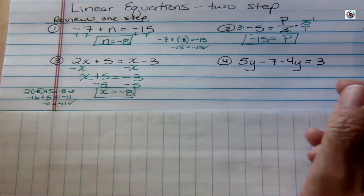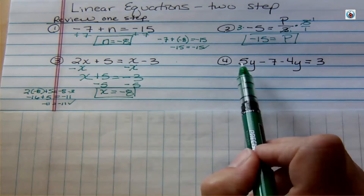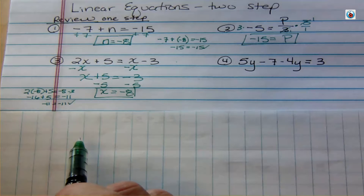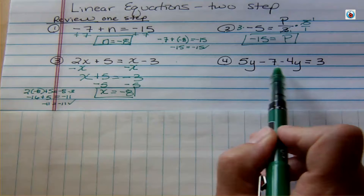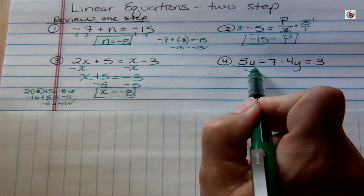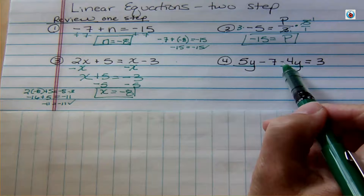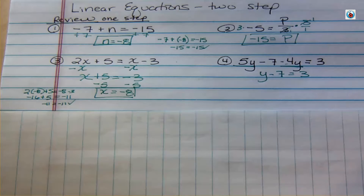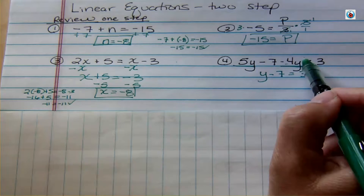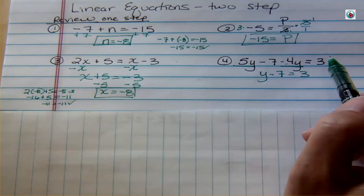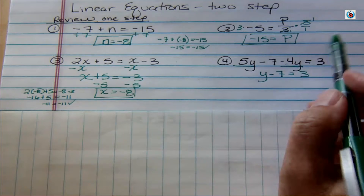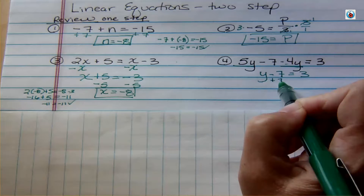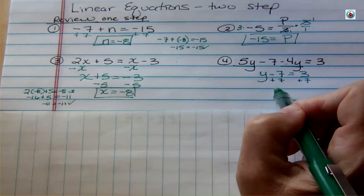Problem 4 is different — variables are only on the left side. When terms are on the same side of the equation, you don't do the opposite; you just combine them directly. You have 5y and you're subtracting 4y, so 5 minus 4 leaves 1y. That simplifies the equation. Now get y by itself: since we have minus 7, add 7 to both sides. Those become 0 and y equals 10.